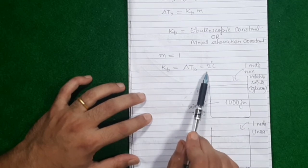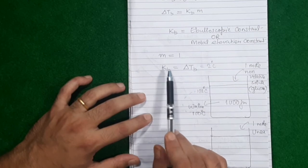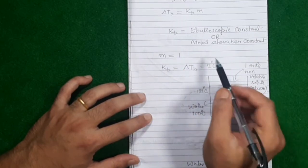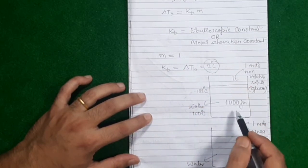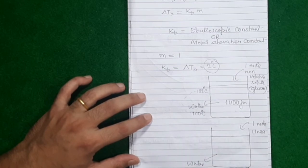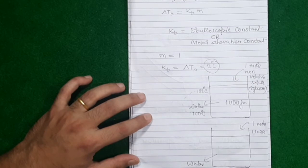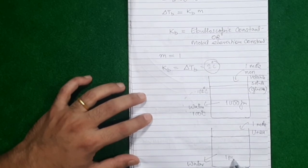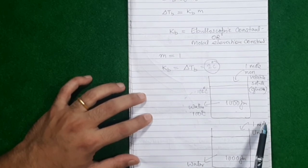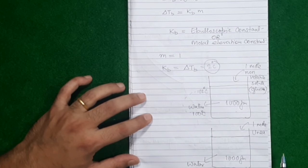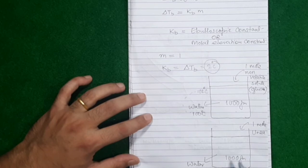Kb is a constant — that means if the boiling point of water rises by 2 degrees now, next time it will also rise by 2 degrees, even if you add a different solute. So next time again I've taken 1000 grams of water and added 1 mole of urea — not glucose, a totally different substance. Because I added 1 mole in 1000 grams of solvent, the molality is again 1.